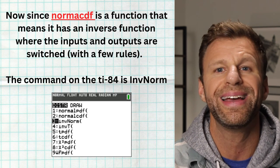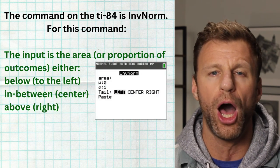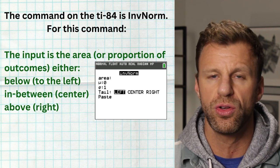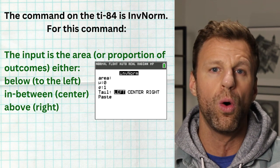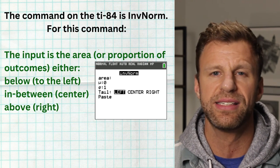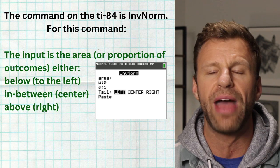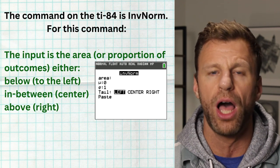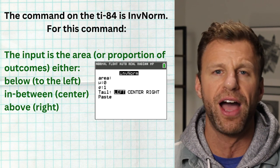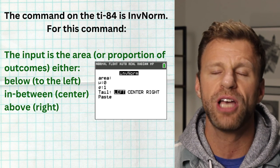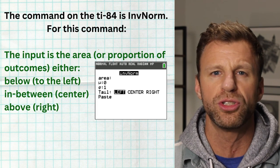Here's how invNorm works. The input is an area, and you have three options: an area below or to the left, an area in the center or in between, or an area to the right or upper values. If you plug in an area of 0.05 and select left, you're looking at the bottom 5% of the normal distribution. If you type in 0.05 and select right, you're looking at the top 5%. And if you type in 0.05 and select center, you're looking at the middle 5% of the normal distribution.